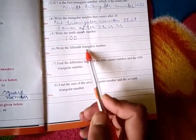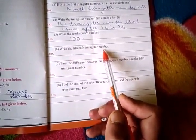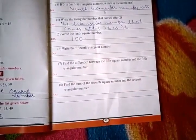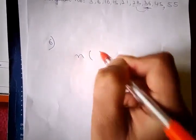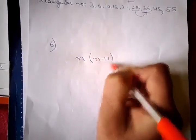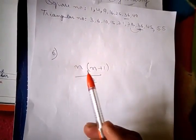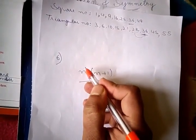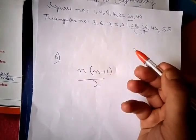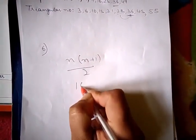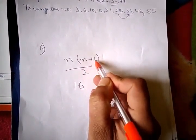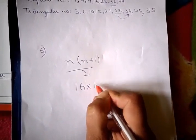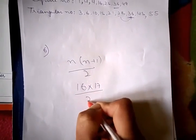Our next question is: write the 15th triangular number. The formula for a triangular number is n × (n + 1) ÷ 2. We have to find the 15th triangular number, so n is 15, and 1 more than 15 is 16. So we calculate 16 × 17 ÷ 2.